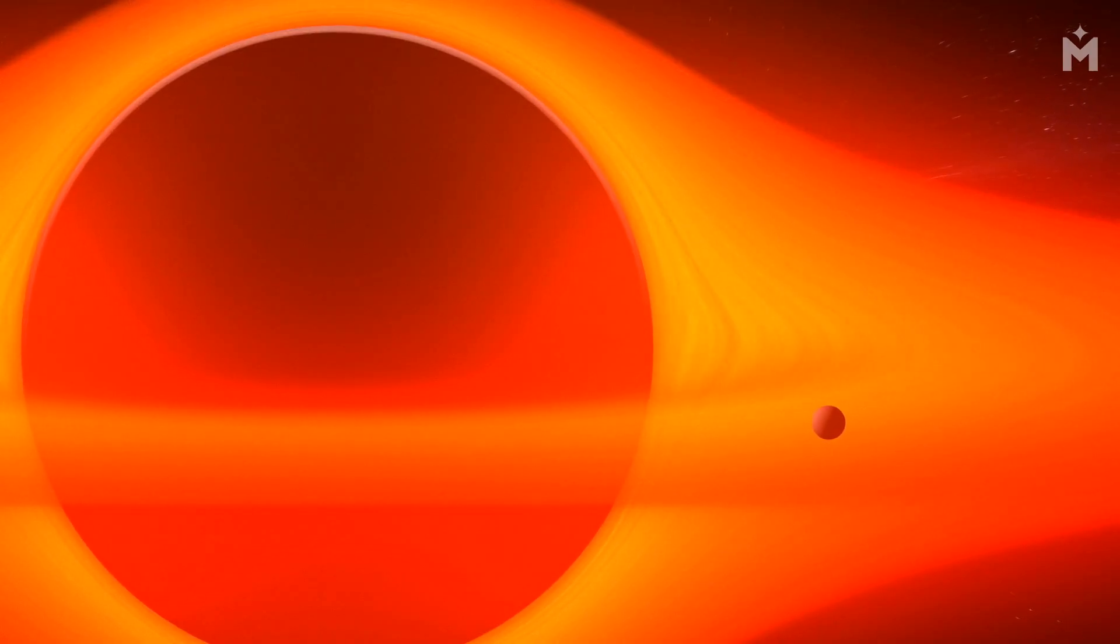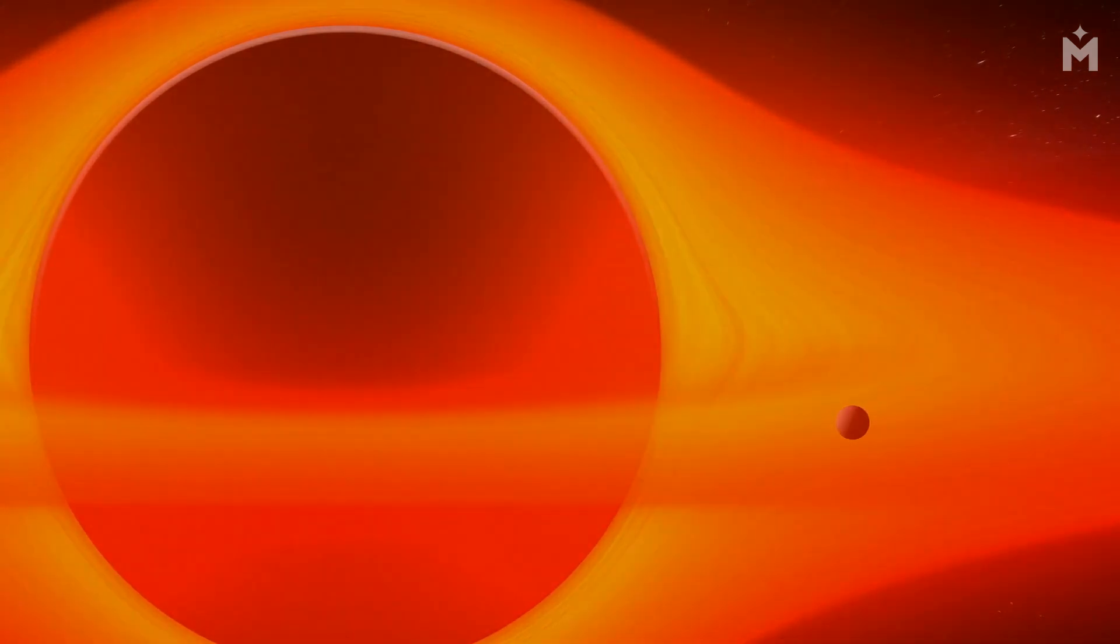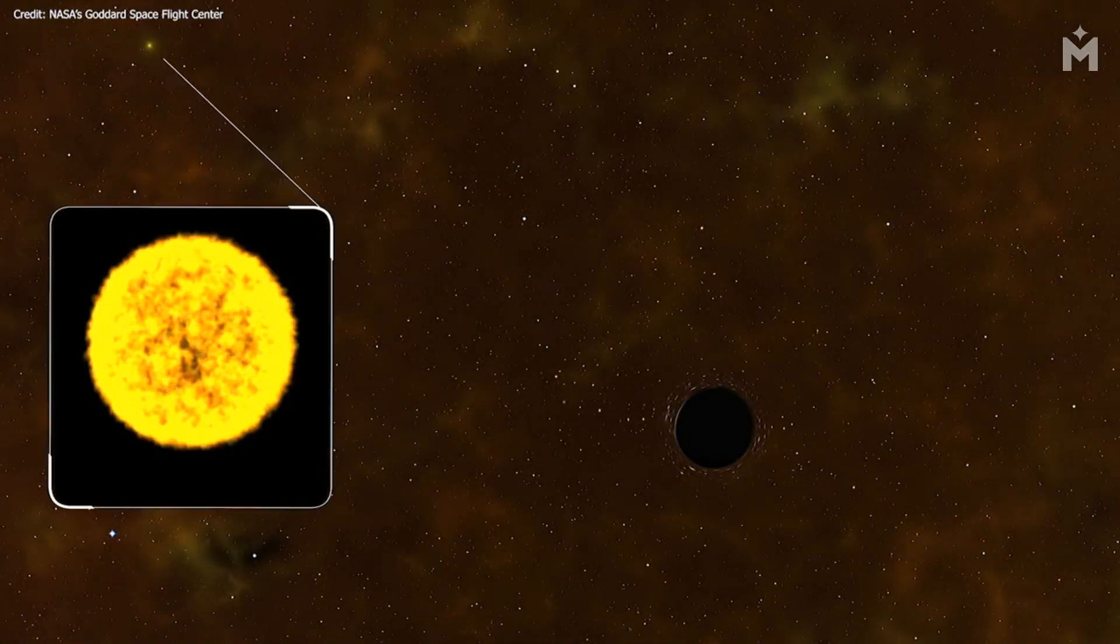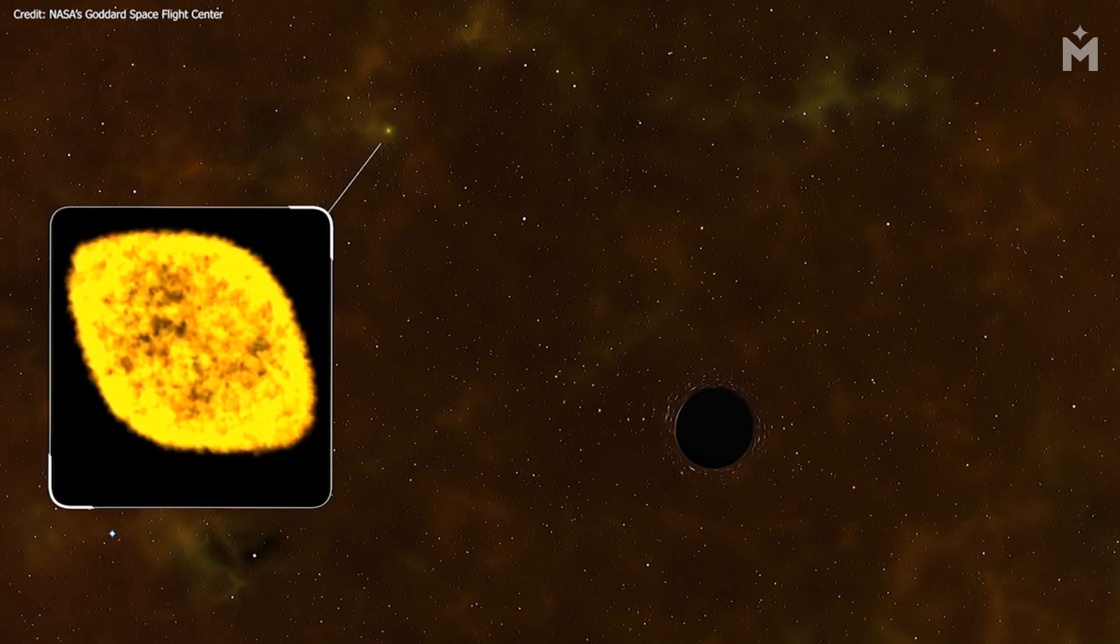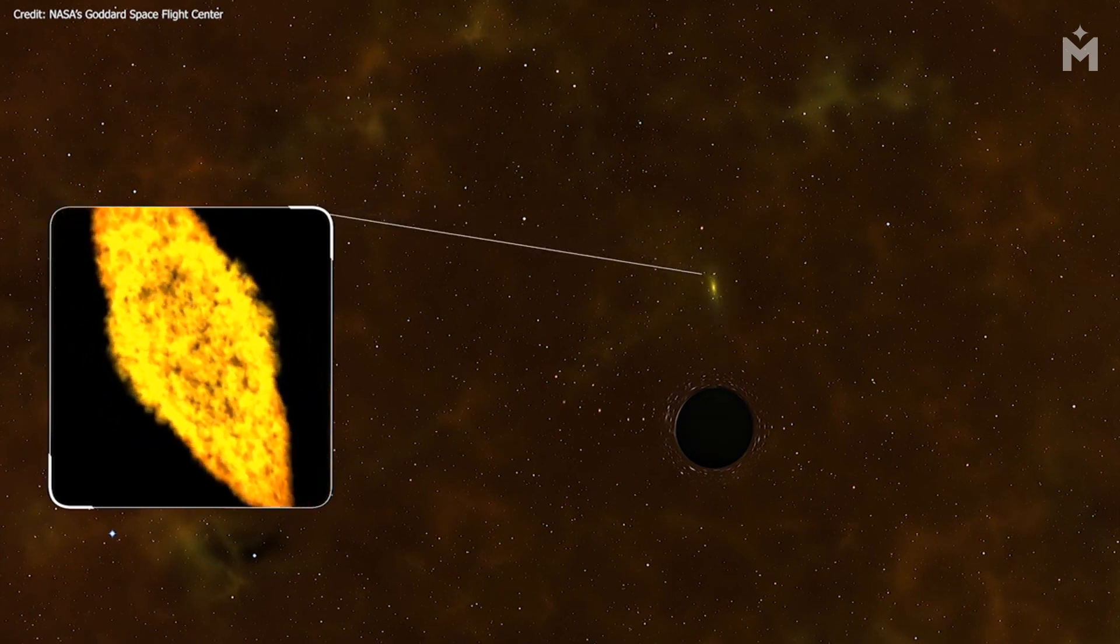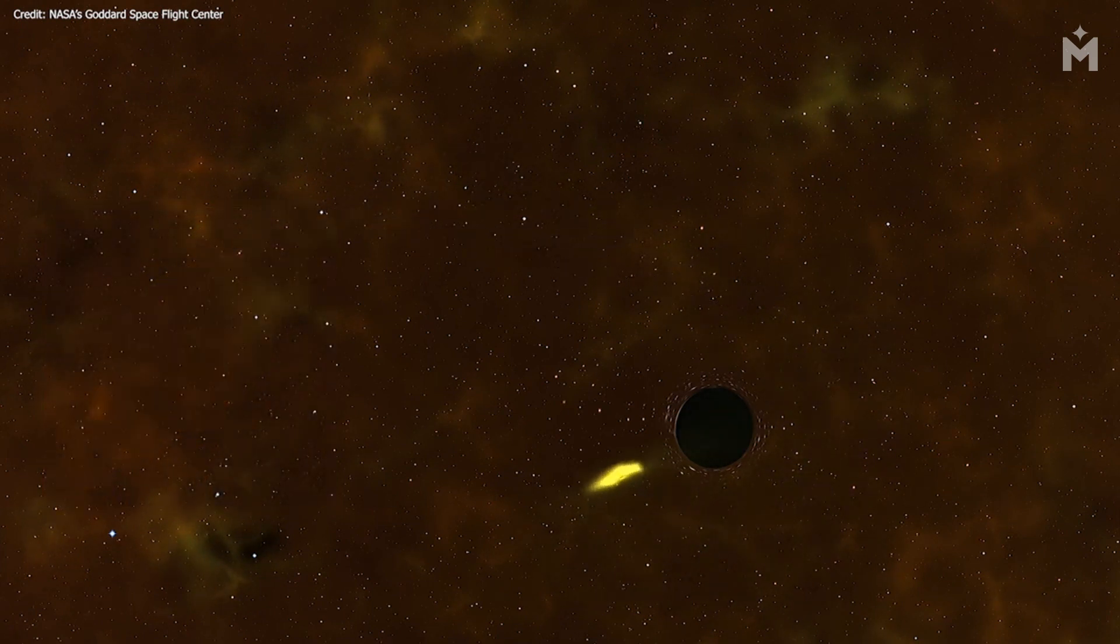The consequences of a star being torn apart by a black hole depend on the size of the star and the size of the black hole. If the star is small and the black hole is large, then not much will happen. The star will just be pulled into the black hole and will disappear.